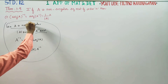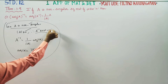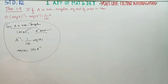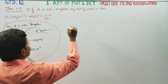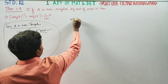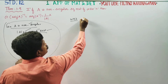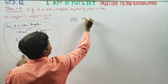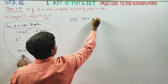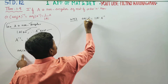Since A is non-singular, determinant A is not equal to 0, and A inverse is not equal to 0. We know that adjoint A is equal to determinant A into A inverse.